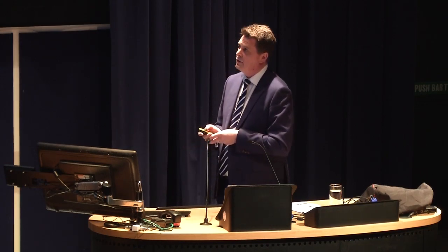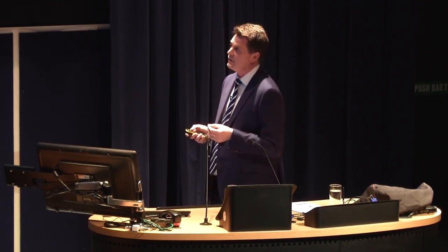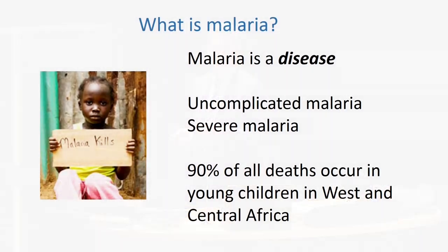Currently we're probably talking about 300,000 to 500,000 people dying from malaria every year. Tragically, 90% of all these deaths occur in young children - those aged under five years, predominantly in West and Central Africa. It's actually a small proportion of people who die from the disease, but the vast number of people that suffer from it ultimately funnel down to create those large numbers of deaths.